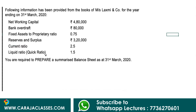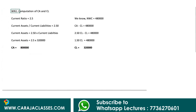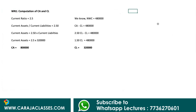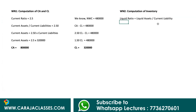Moving to Working Note 2, the liquid ratio equals liquid assets divided by current liabilities. Liquid assets are basically current assets minus inventory. Since we know current assets and current liabilities, this information will help us find the value of inventory. The liquid ratio formula is: liquid assets divided by current liabilities, where liquid assets equals current assets minus inventory.